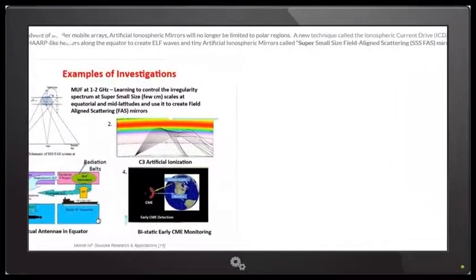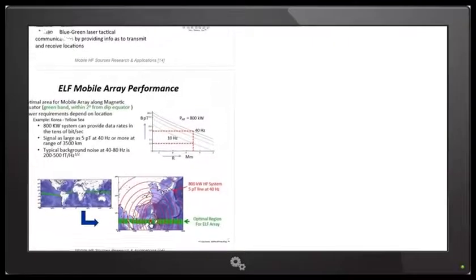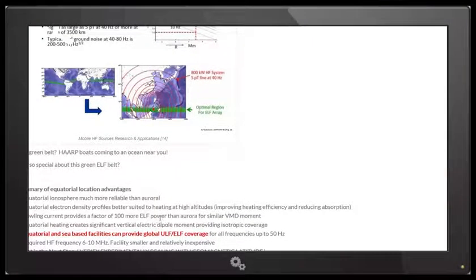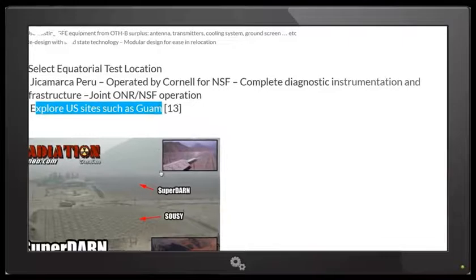And these are mobile VLF, ELF radar ionospheric heaters. So you can see right here, ELF mobile array performance. And here's where we want to put a floating HAARP boat. So that's where that went. And they also go on to say, we want to put a test facility down here at Jicamarca, Peru and explore US sites such as Guam.